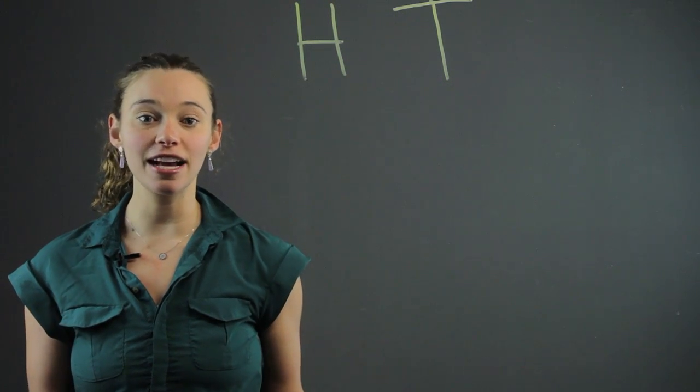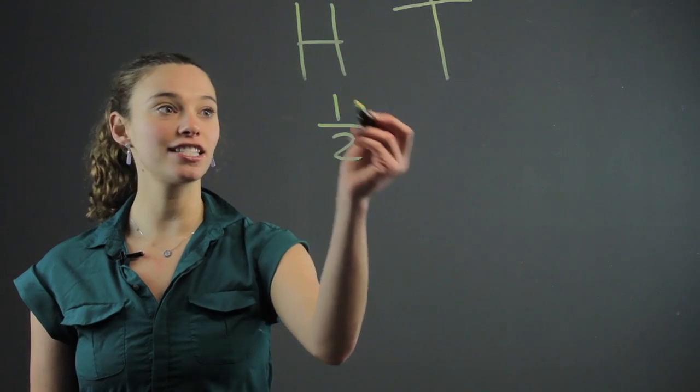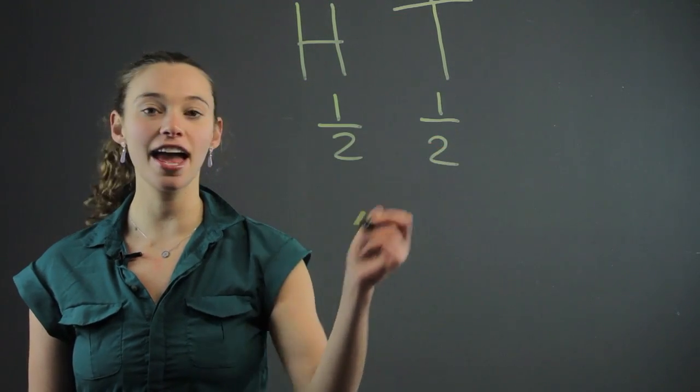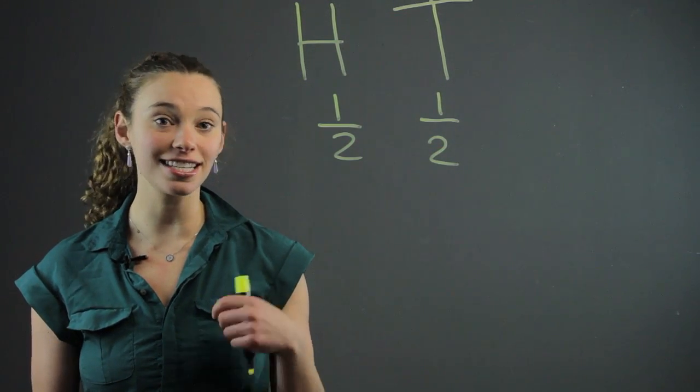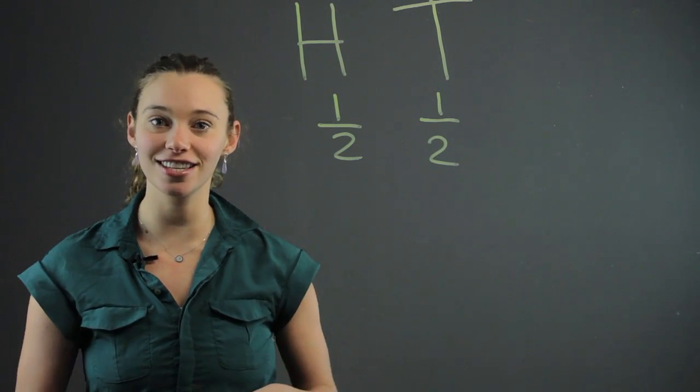There's two probabilities. We can either write that as 50-50 or 1 half. A half chance of heads, a half chance of tails. And every time you flip the coin, it's the same probability. Half chance that you're going to get heads and half chance that you're going to get tails.